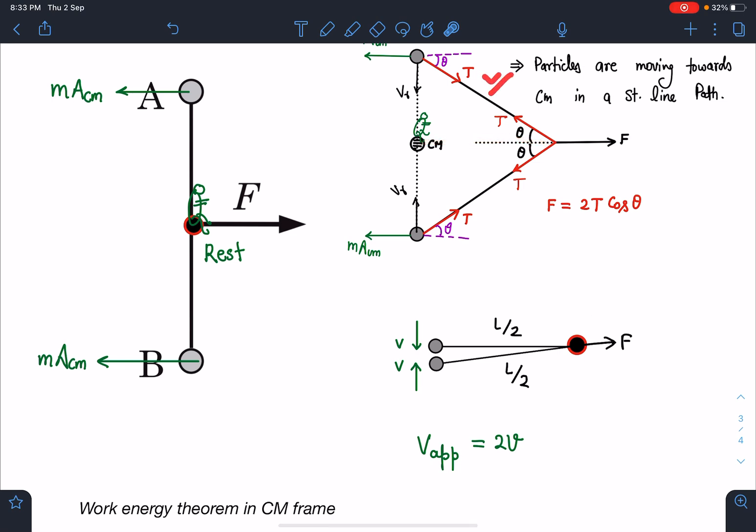Sorry, this length is L by 2. So finally, when they are about to collide, the relative velocity in CM frame will be v and v. So velocity of approach here is going to be 2v. And this distance becomes L by 2. So now we can apply work energy theorem from the center of mass frame.